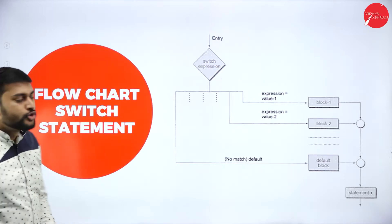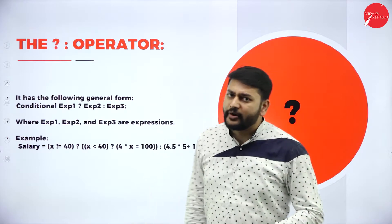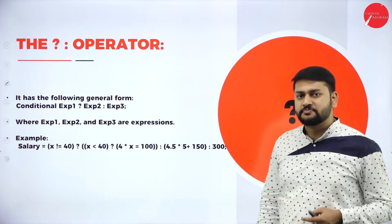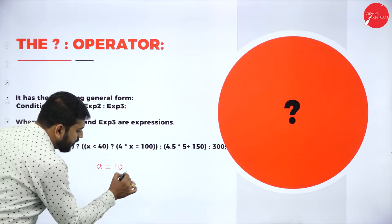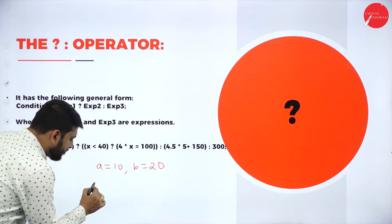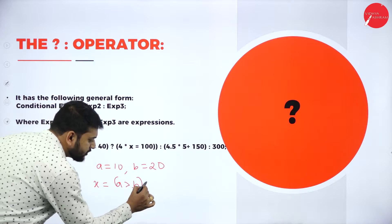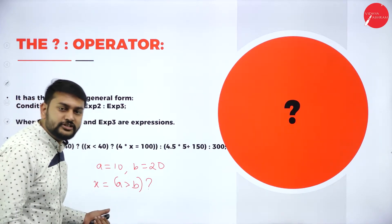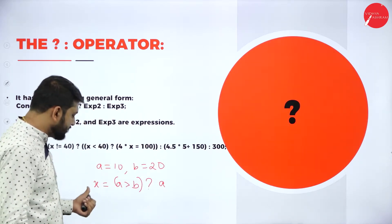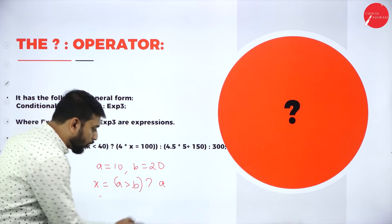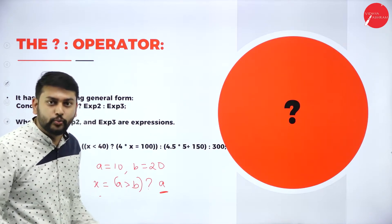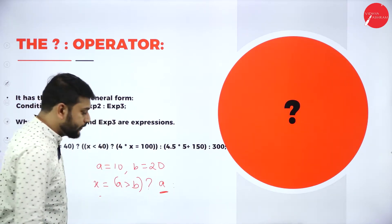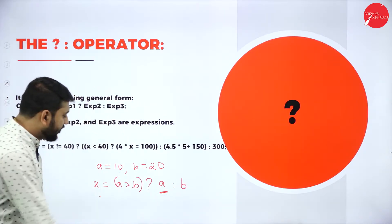Before going to the live demo, let me explain the conditional operator. Say for example, A is equal to 10 and B is equal to 20. I have X is equal to A greater than B — this is the condition I am checking with the conditional operator. The question mark is what I call the conditional operator. If this condition is true, whatever I write in the true block will be stored in variable X. After that, I write a colon, and then I write the false block — this will be executed if the condition is false.